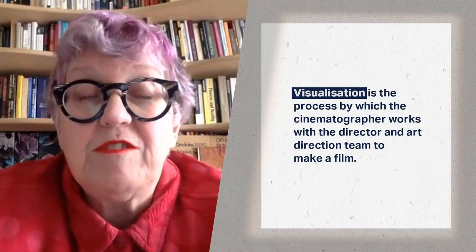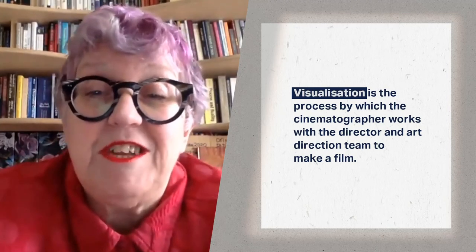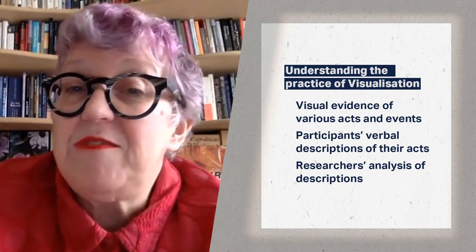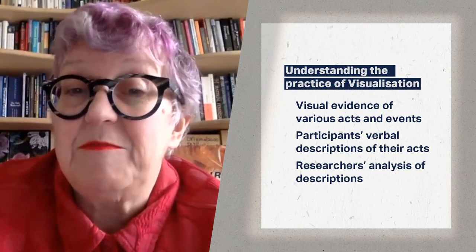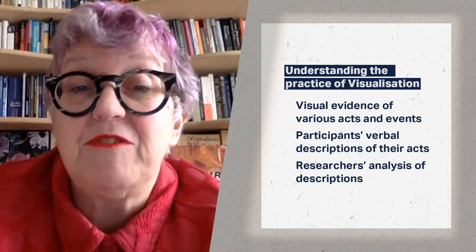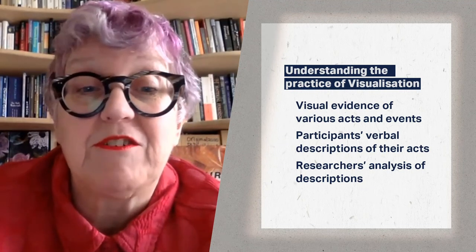I looked specifically at two areas for this chapter: visualisation and cheating. The first is the process by which the cinematographer works with the director and production design or art direction team to make a film — where the ideas come from, what the visual influences are, but more importantly how these were communicated. I noticed that aside from standard documents like storyboards, set lighting diagrams, and notebooks, there was a kind of professional rhetoric — a way of talking about the colour palette, tonal range, composition and temporal flow of lighting. So I needed both the visual evidence, descriptions of the embodied choreographic event of making certain shots, and reflexive accounts in interviews, plus my own analysis of accounts by filmmakers and critics.